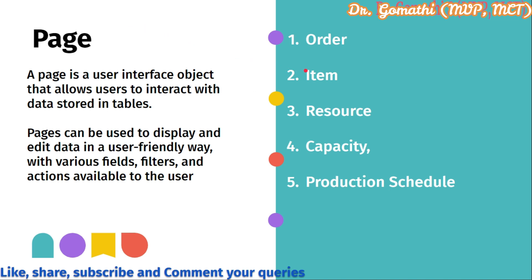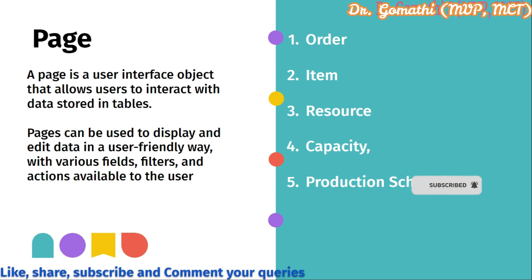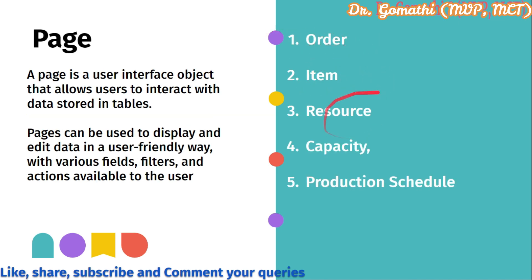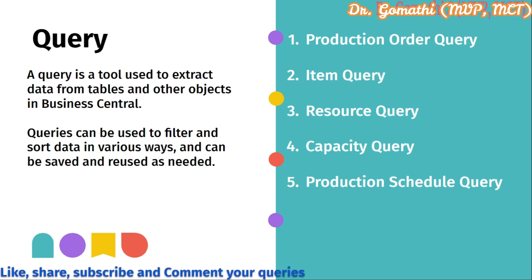A page is a user interface object that you can interact with in Business Central. Pages can be used to display and edit data in a user-friendly way with various fields, filters, and actions. We will create pages for production order, item, resource, capacity, and production schedule. You should think about what type of pages to create — list pages and card pages are needed for every table. You can also create worksheet or navigation pages depending on your creativity.